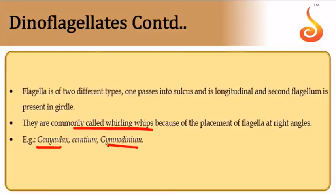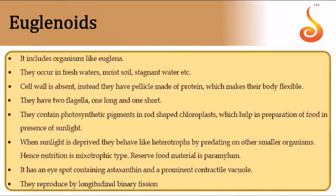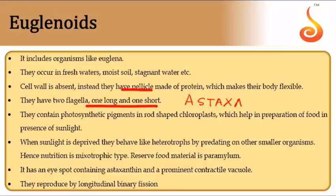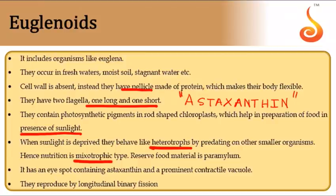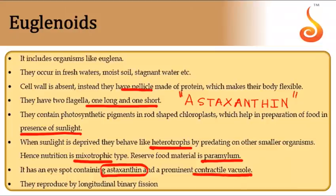Euglenoids (e.g., Euglena) have no cell wall but a proteinaceous pellicle. They have two flagella and a special eyespot with photosensitive pigment astaxanthin, helping them migrate toward light. When no sunlight is available, they can behave as heterotrophs — called mixotrophic nutrition. Their reserve food material is paramylon. They have a contractile vacuole (freshwater organisms) and reproduce by longitudinal binary fission.